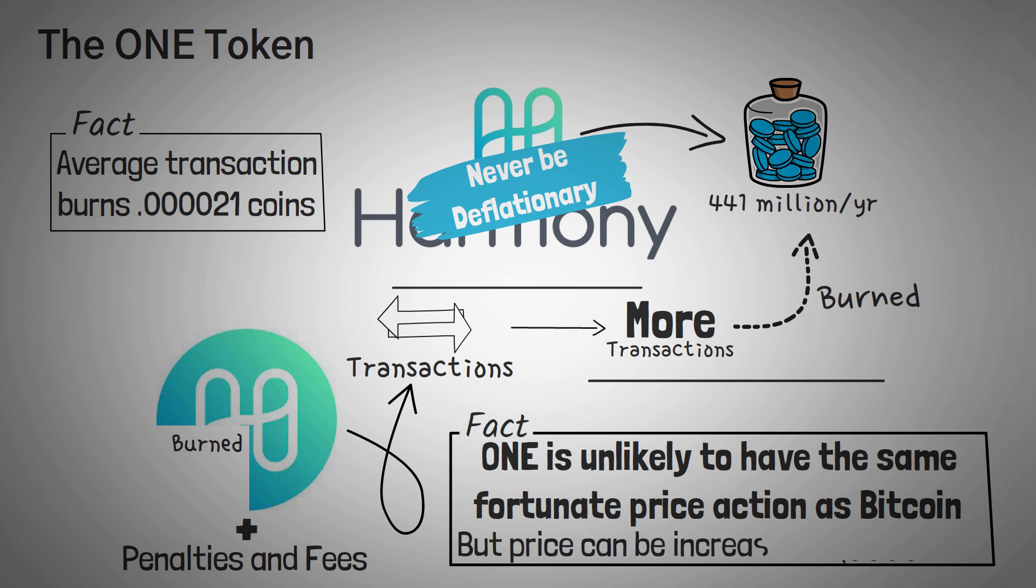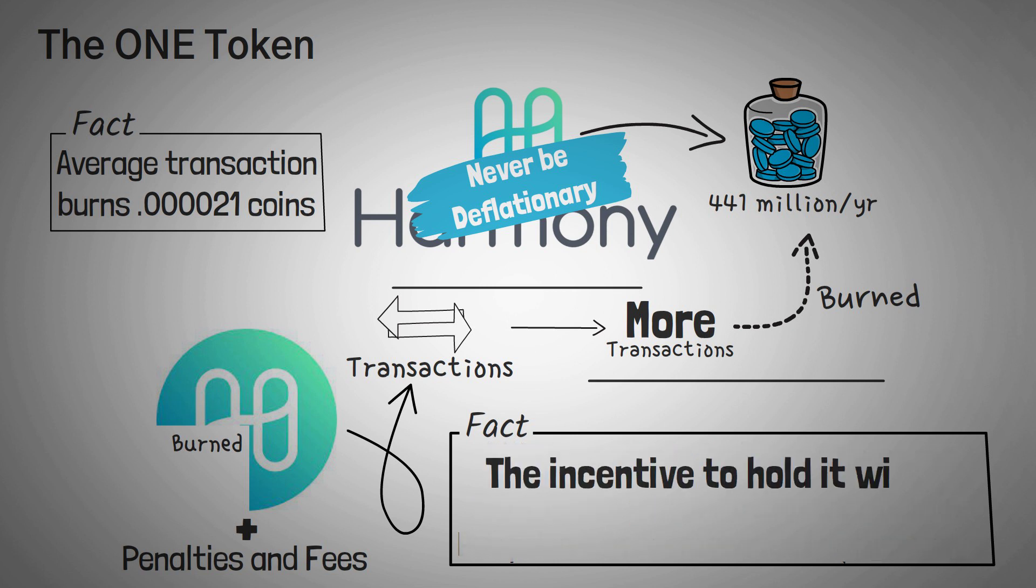Now, it can of course increase in price for other reasons, but some argue that if 1 is deflationary in nature, the incentive to hold it would be greater than to spend it, basically resulting in a network that is not used as much as they want it to be used.